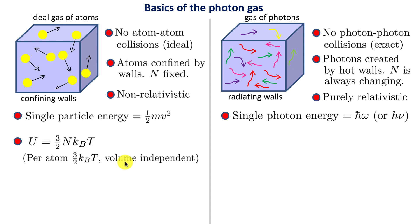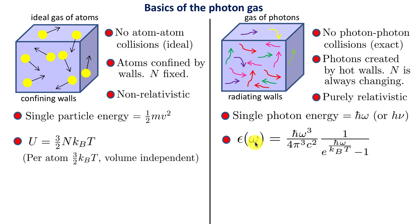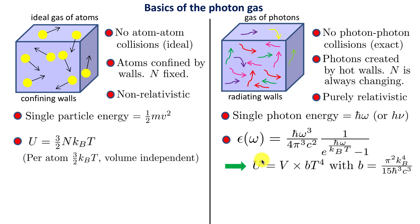For a photon gas, we need to do more work to get the internal energy U. Starting from the Planck formula, we integrate over all omega to get the total internal energy. Here there's a big difference: to get the energy of all photons in the box we must integrate over the entire volume of the box. Therefore, the internal energy U is proportional to the volume as well. Integrating epsilon of omega over all omega gives U equals V times b T to the 4, where b is a constant. The energy inside a cavity is proportional to the fourth power of temperature, very much like the Stefan-Boltzmann law.